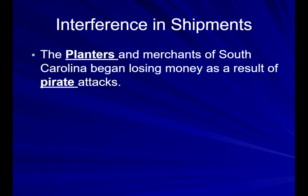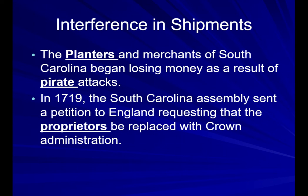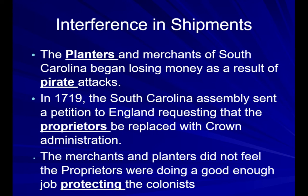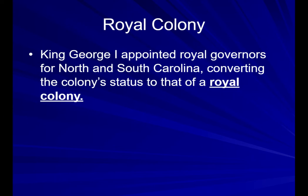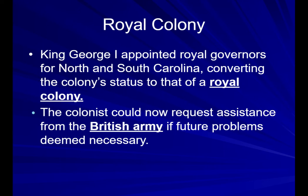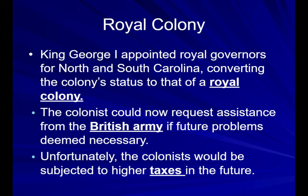There was also interference with their shipments — the planters and merchants of South Carolina began losing money as a result of pirate attacks. And in 1719, the South Carolina Assembly sent a petition to England requesting that the proprietors be replaced with the crown administration. The merchants and planters did not feel that the proprietors were doing a good enough job protecting the colonists. So they became a royal colony. King George was able to appoint royal governors for North and South Carolina, converting the colony status to that of a royal colony. The colonists could now request assistance from the British Army if future problems deemed necessary, but unfortunately that also meant they would be subjected to higher taxes in the future.